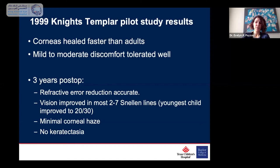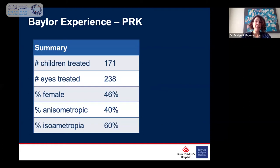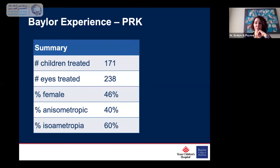We decided to open this study again. The appropriate patient diagnoses were severe anisometropia, severe isoametropes, and the facial anomaly patients. All patients had failed regular standard refractive amblyopia therapy. Over the last 15 years re-enrolling new patients, this is not a high-volume procedure at Texas Children's Hospital at Baylor. 171 patients have been treated, 238 eyes — 60% are isoametropic and 40% anisometropic.